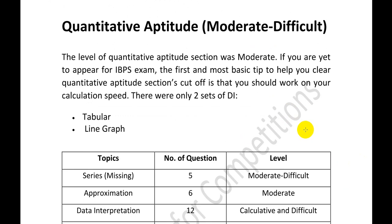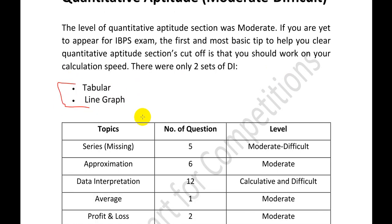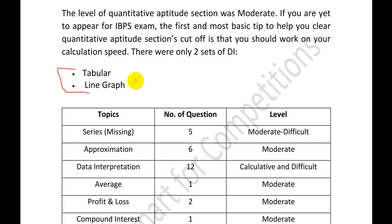Moving on to quantitative aptitude — the total section would be considered moderate to difficult. The first and most basic tip to clear the aptitude section cutoff is to work on your calculation speed, as there is less time and you need to cover most questions. There were only two sets of DI — one tabular and one line graph — which was a similar trend to the first shift.